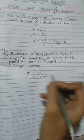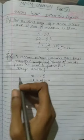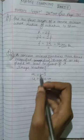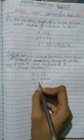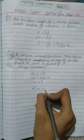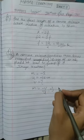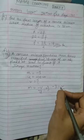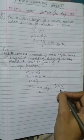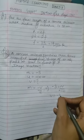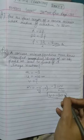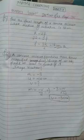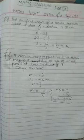Using the magnification formula, m = -v/u. Substituting the values, -3 = -v/(-10), which simplifies to v = -30 cm.